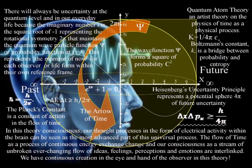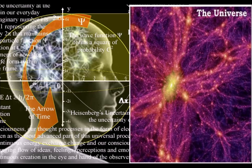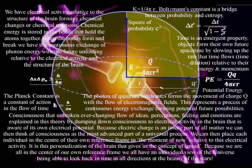In this theory, conscious awareness is the most advanced part of a universal process and is an integral part of the dynamic structure of the universe. Most mainstream science will tell you that consciousness is a by-product of the physical brain, and that chemical activity in the brain forms conscious awareness. But chemical reactions are based on physical interactions — whenever the bonds between atoms form and break, there is an exchange of photon energy.